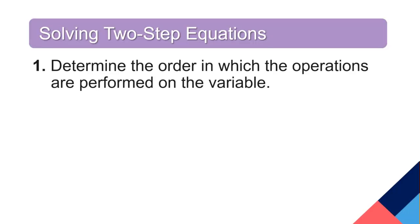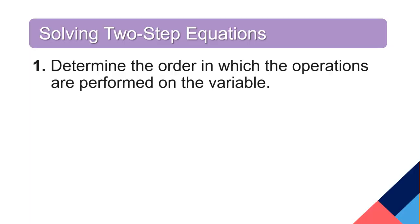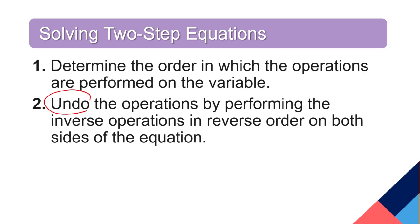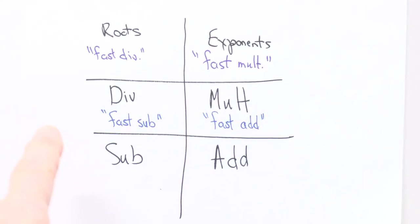So, you might be asking, well, what is the reasoning on the order that I'm supposed to do here? Here's how we solve the problems. We determine the order in which the operations are performed on the variable. So, we look at the equation and we see what's being done first, what's being done second. And then, step two, undo the operations by performing the inverse operations in reverse order. Of course, on both sides of the equation.